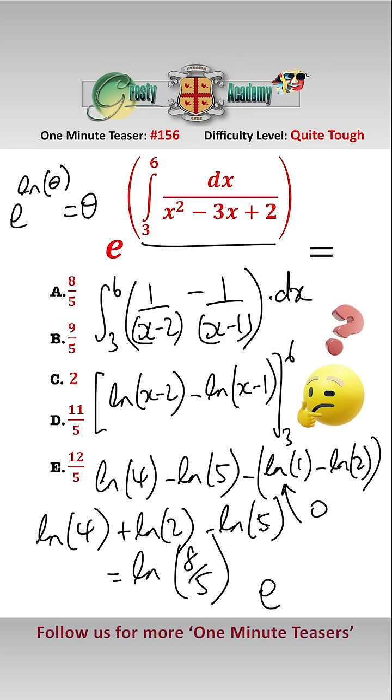So therefore, our answer is e to the log 8 over 5, which, as we've already said here, is just equal to 8 over 5, which is answer A.